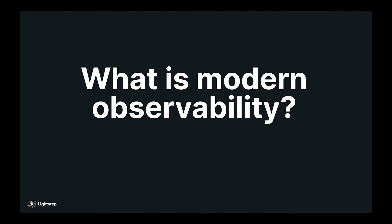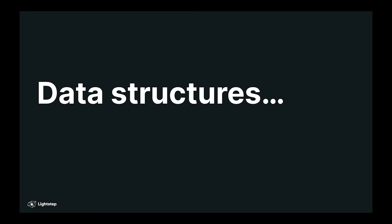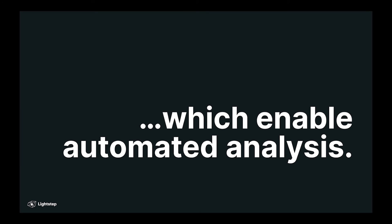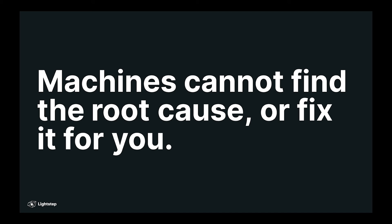So, what is modern observability and how is it different from traditional observability? The difference is that we now have data structures which enable automated analysis. Now, it's important to note that machines can't find the root cause or fix it for you. You're still going to have to do that.